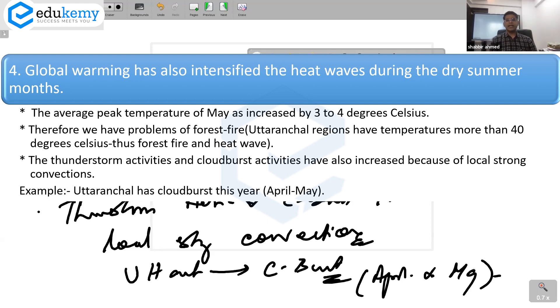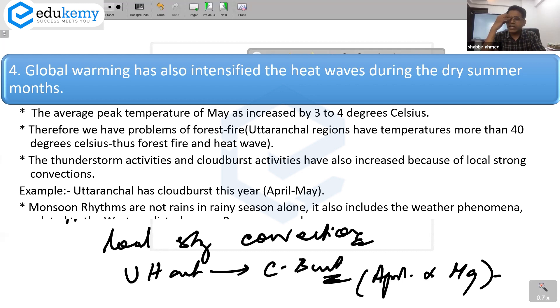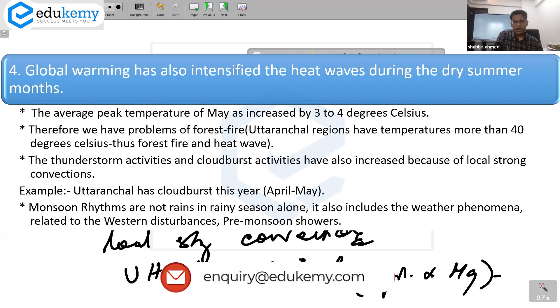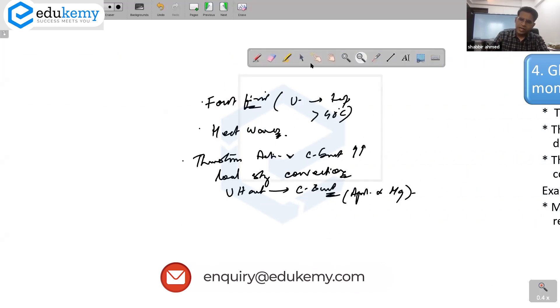The thunderstorm activities have increased, and the cloud bursts have also increased because of local strong convection. This year, Uttarakhal has had cloud bursts. The local heating is in the month of April and May. Uttarakhal this year had cloud bursts. And remember, when we talk about monsoon rhythm, it is not about the monsoon rains in the rainy season alone.